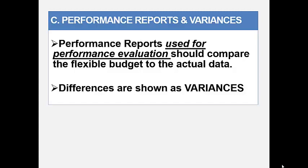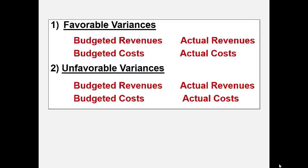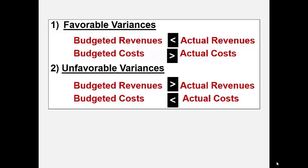We will find differences and they'll be called variances. We're going to have either favorable or unfavorable variances. If budgeted revenues are less than actual revenues, that's favorable. If budgeted costs are greater than actual costs, that's favorable. So you want actual revenues to be greater and actual costs to be less than the budget. The opposite is true for unfavorable variances — your budgeted revenues will be greater than actual and your budgeted costs will be less than actual. If actual revenues are less than budget, that is unfavorable, and if actual costs are greater than budget, it is unfavorable.